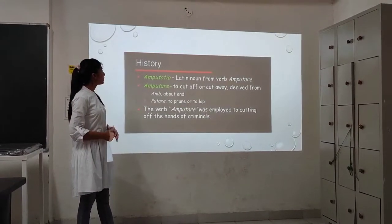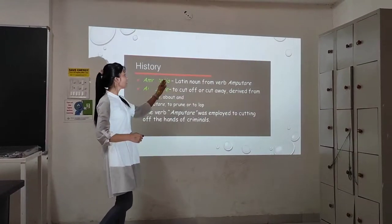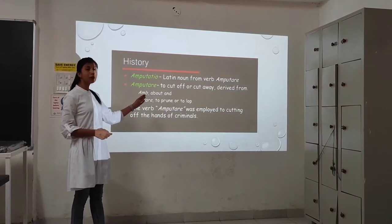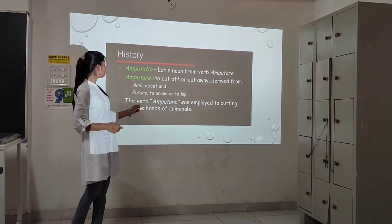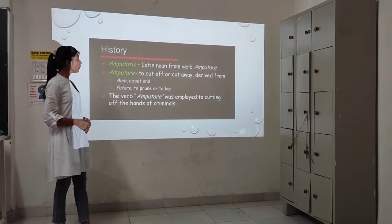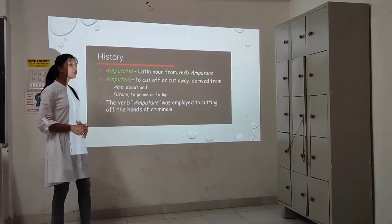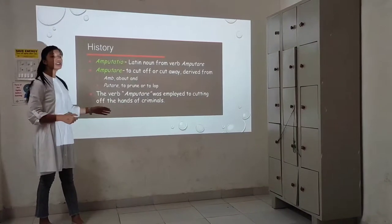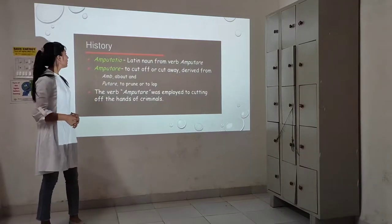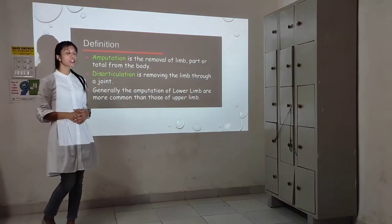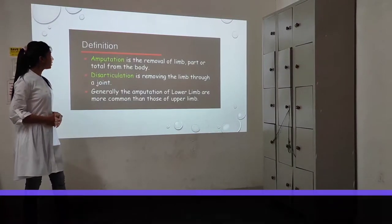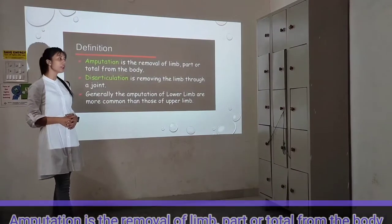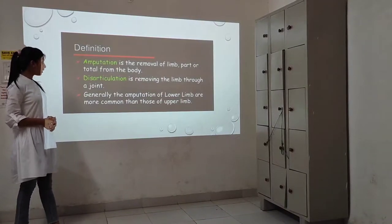What is Amputation? Amputation is derived from the Latin word 'amputeal' — to cut off or cut away, derived from 'amb' meaning about, and 'putare' meaning to prune or to lop. The word amputation was historically employed through cutting off the hands of criminals. The definition of amputation is the removal of the limb part or the total body part from the body.